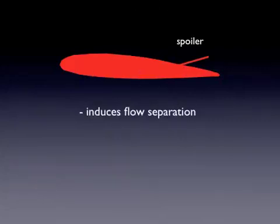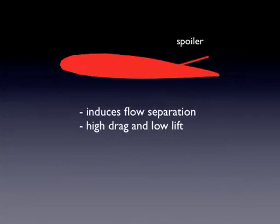You might see the pilot deploy another flap when landing — a flap that often pops up, called the spoiler. This is designed to induce flow separation, actually causing the wing to stall. Why would you want your wing to stall? When landing, you want to slow down rapidly and stay on the ground, so this causes high drag and low lift as you force the wing into a stall situation.